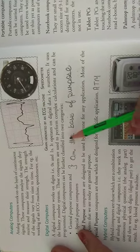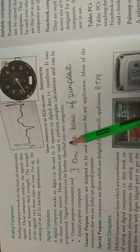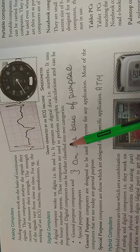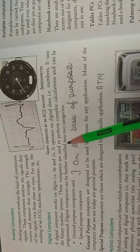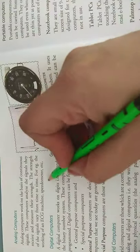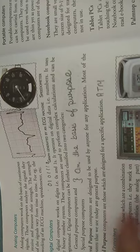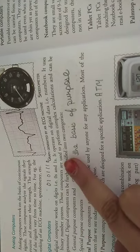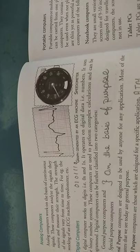Then comes the digital computer. Digital computer - aapko naam se pata pad raha hai - digits. Aisa computer that works on digits. Computer sirf ek language samajhta hai, machine language. And machine language mein sirf 0 aur 1 hi use hote hain. Toh yeh dho digits, 0 aur 1, jo computer in dho digits pe kaam karte hain, us computer ko bolte hain digital computer.